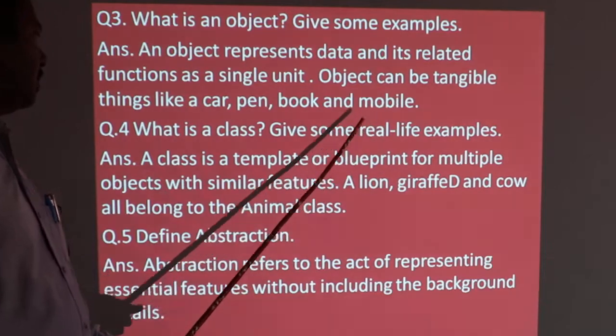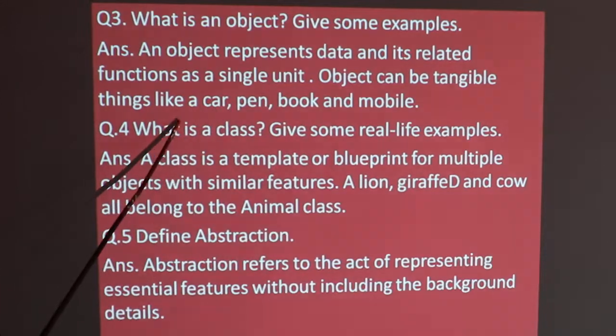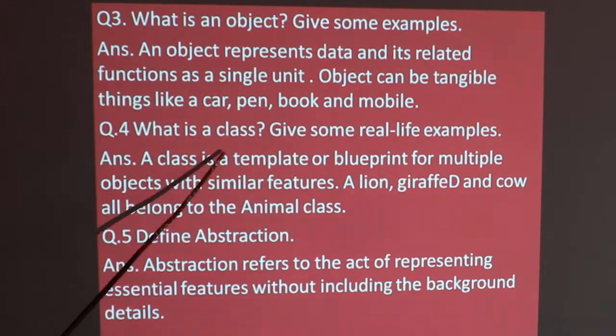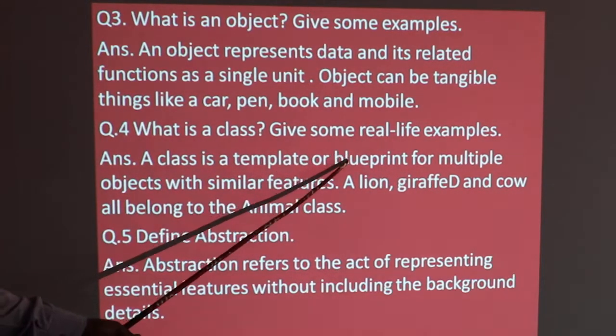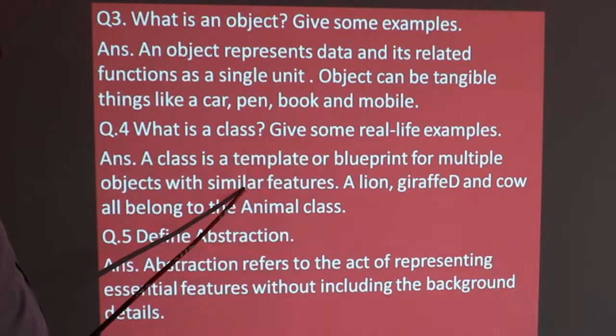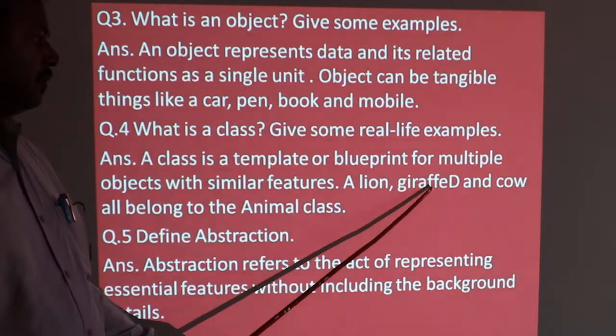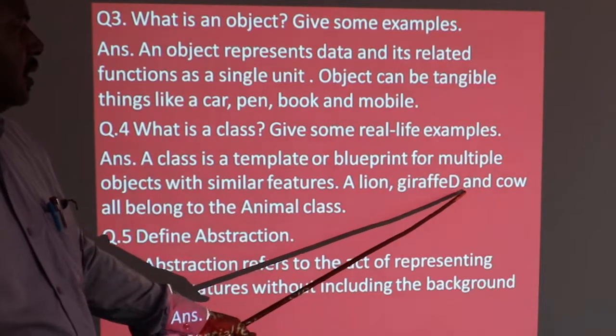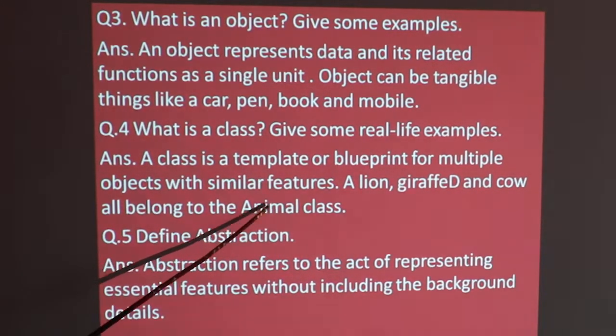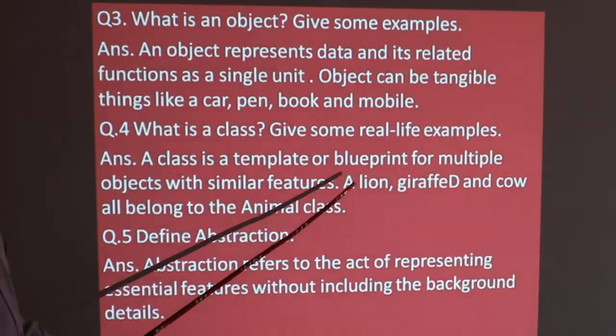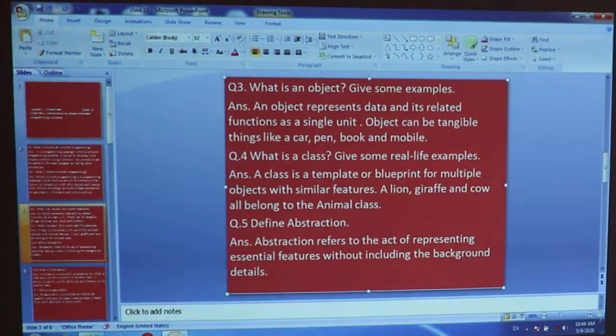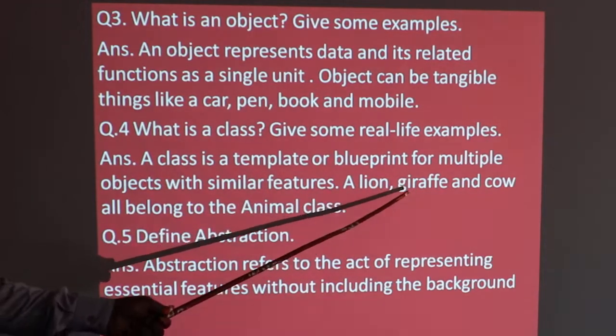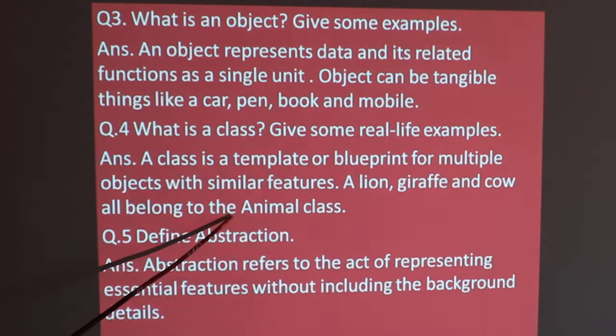What is a class? Give some real life examples. Class is a template, frame, or blueprint for multiple objects. From one frame, from one blueprint, many objects can be created with similar features. For example, lion, giraffe, and cow all belong to the animal class.